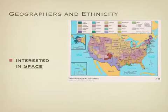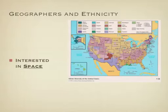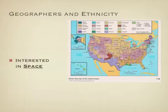What are geographers concerned about with ethnicity? They're interested in looking at space — why are ethnicities grouped where they're grouped? If you take a moment and look at this map, these are different ethnic groups that have migrated to the United States and settled. You can see some patterns. For example, at the border between Mexico and Texas, you can see a large Mexican ethnicity, and in the center of the United States, a large German influence.